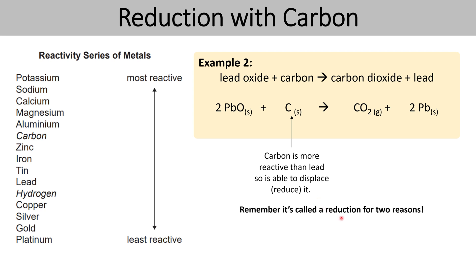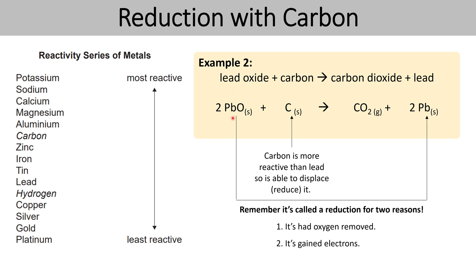We call this process reduction for two different reasons. The first is that it involves the removal of oxygen — lead had oxygen but it no longer does in the products. The second reason is the gain of electrons: lead in lead oxide has a 2+ charge, whereas pure lead has a 0 charge, so to get from 2+ to 0 you would gain two negative electrons. We could explain this using a half equation: Pb²⁺ + 2e⁻ → Pb. So it's reduction because it's gained electrons.